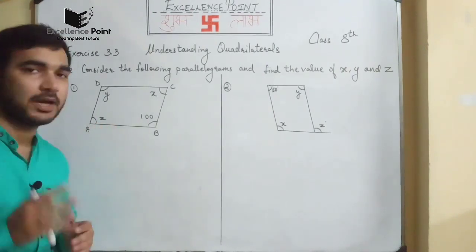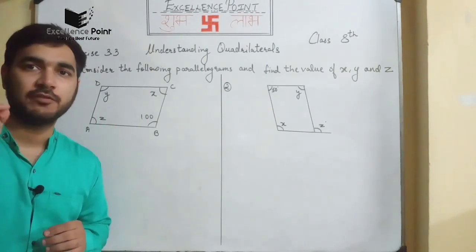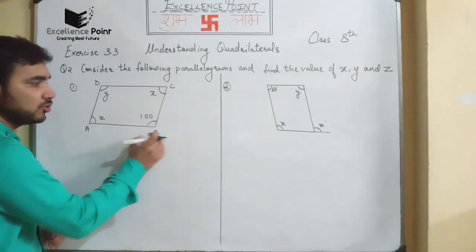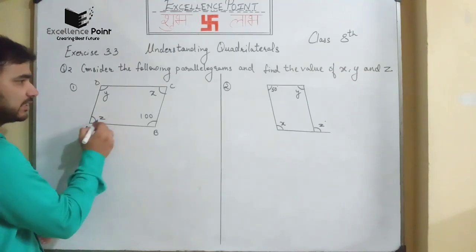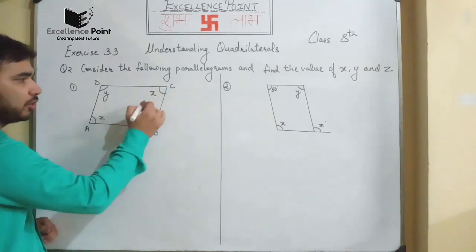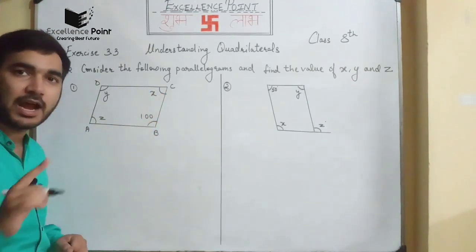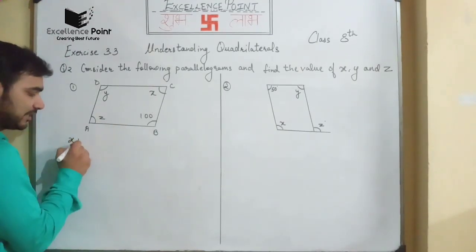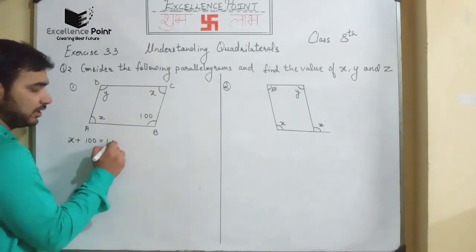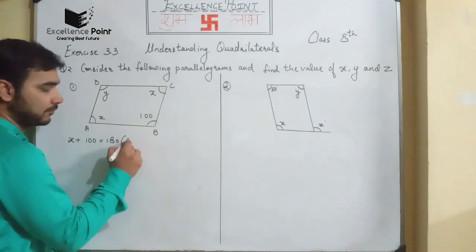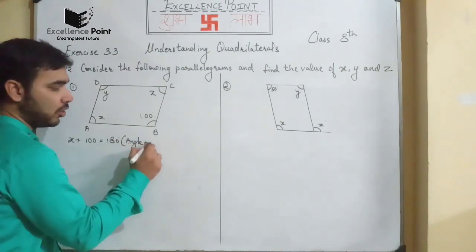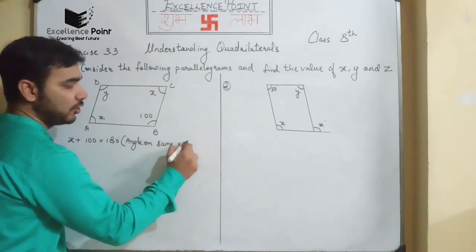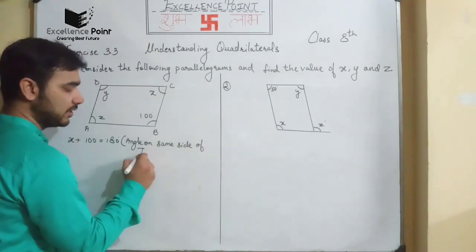In question number two we have given a few parallelograms and by using the property of parallelograms we have to find the value of X, Y and Z. By using the property of parallelogram we can say that X and 100 degrees when added should be equal to 180 degrees. So X plus 100 should be equal to 180 degrees — angles on the same side of a transversal are supplementary.